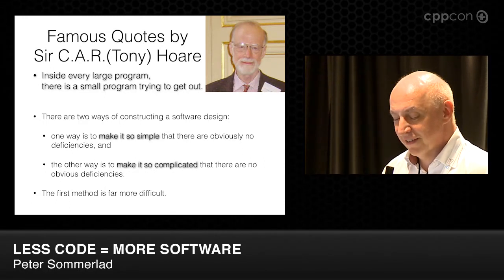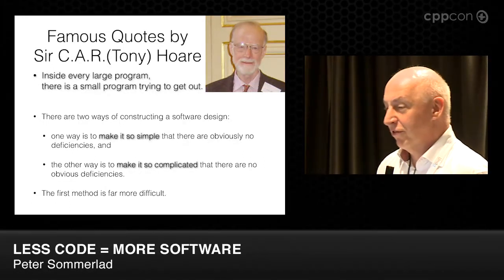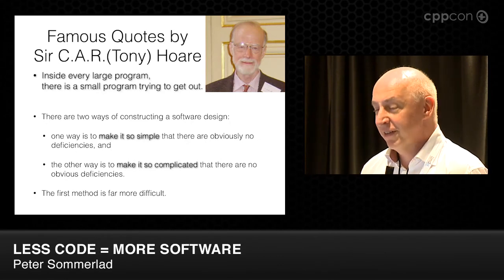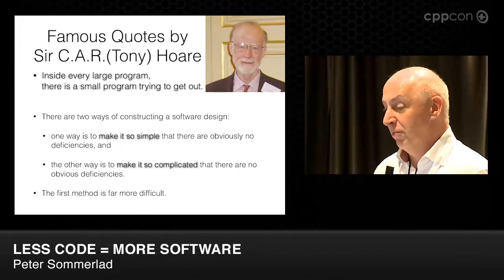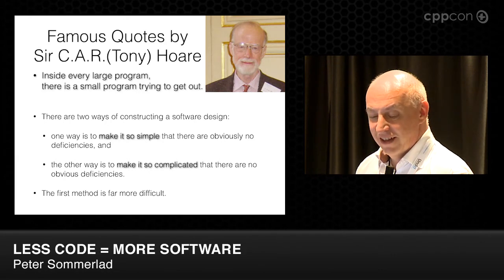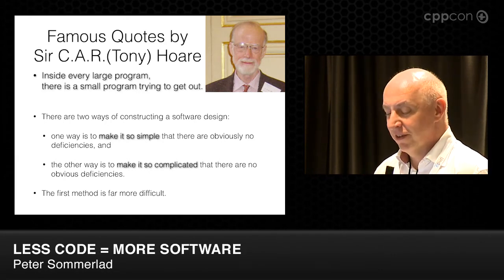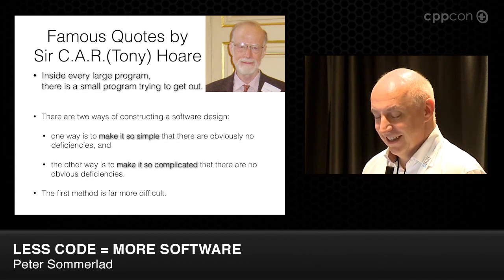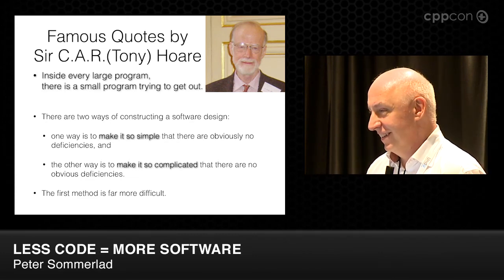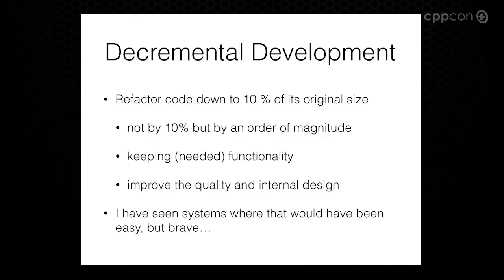The other quote is: there are two ways of constructing a software design. One is to make it so simple that there are obviously no deficiencies. The other is to make it so complicated that there are no obvious deficiencies. Both are possible. You can guess which one will get you a better working solution and which is harder to do. That's what decremental development is about — try to make your software simpler and smaller.